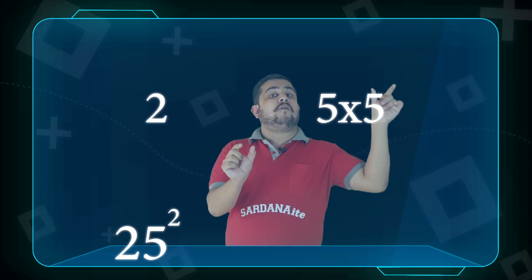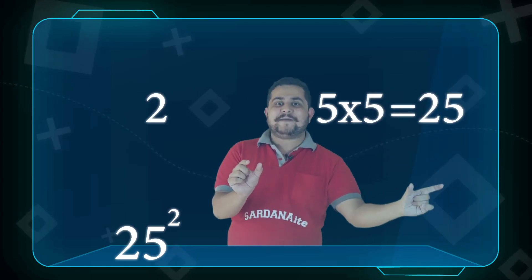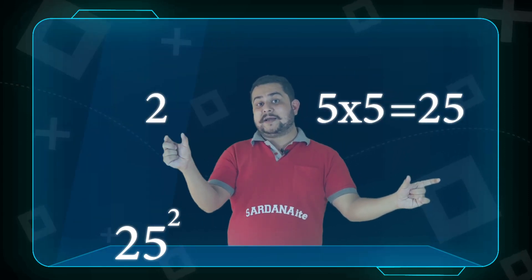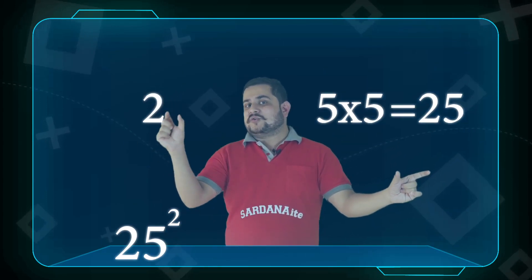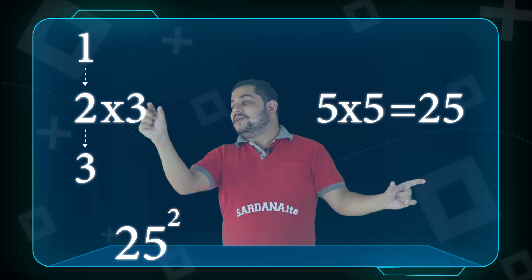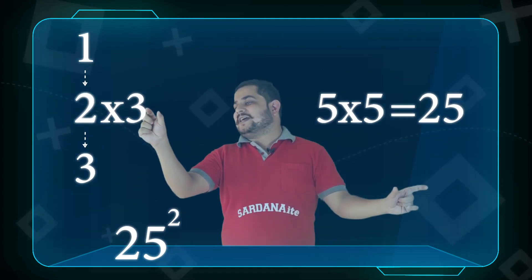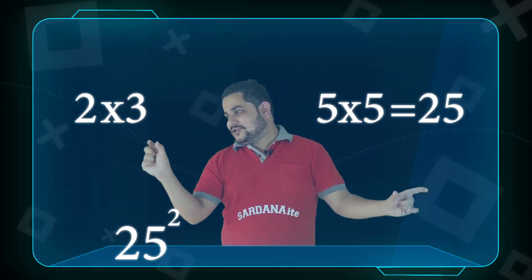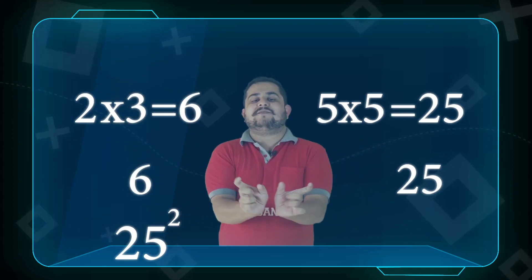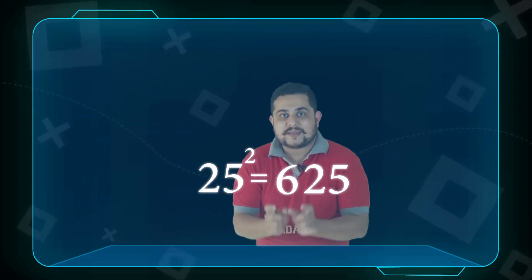First, we will take 25. Now, 2 and 5 — there are two digits, so the unit digit is 5. What is the square of 5? You will say 25. And what is the remaining number? That is 2. So, multiply 2 with its next number: 2 into 3. What comes after 2? 3. So, 2 into 3 is 6. Now your answer will be 625.